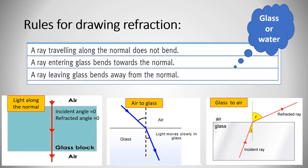The second rule: a ray entering glass bends toward the normal. So the ray in the figure in the middle will be incident in air, refracted in glass, refracted in a way that it's getting towards the normal or closer to the normal. So the refracted angle will be smaller than the incident angle.